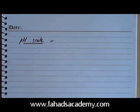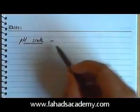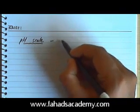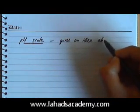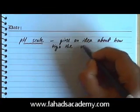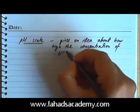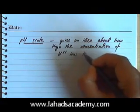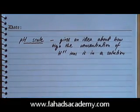Whenever we talk about acids and bases, you cannot move on until you have understood what the pH scale means. When we are dealing with acids and bases, the term pH is used very often. It's basically a pH scale and it gives you an idea of the concentration of H⁺ ions in a solution. That is what the pH scale tells us.